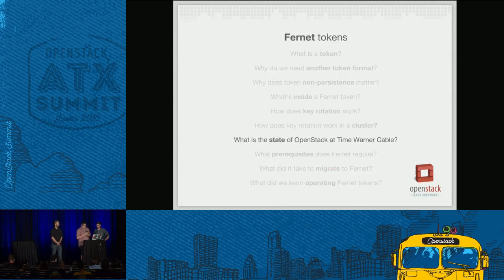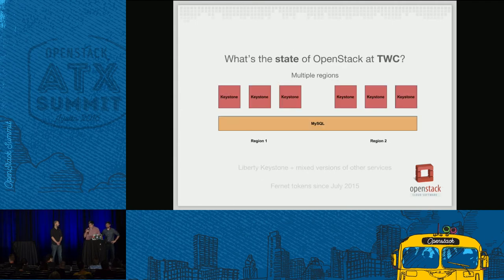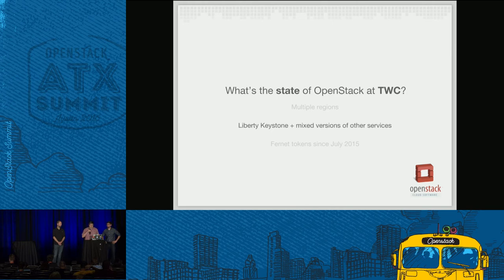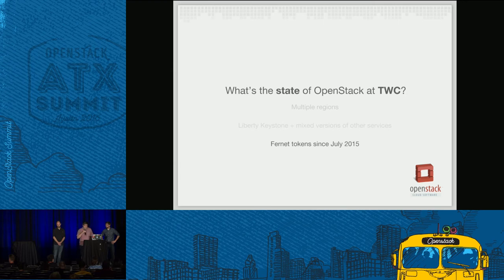I'll give a brief overview of OpenStack at Time Warner Cable and how our Fernet switch went. We run OpenStack in multiple regions, but for Keystone specifically we have a region-spanning MySQL Galera cluster so users have the same credentials in both regions. We're running stable Liberty Keystone in a Docker container, with mixed versions of other services — Horizon off of master, most everything else on Liberty. We've been using Fernet tokens in production since July 2015, about nine months.